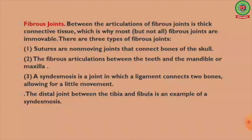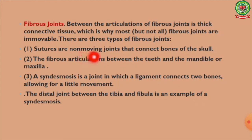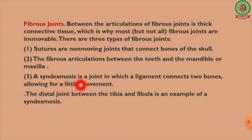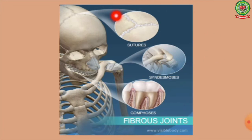Next we discuss types of joints depending upon structure: fibrous joints, cartilaginous joints, and synovial joints. In fibrous joints, thick connective tissue lies between the articulating bones, which is why most fibrous joints are immovable. There are three types of fibrous joints: sutures (non-moving joints connecting bones of the skull), the fibrous articulation between the teeth and the mandible or maxilla, and syndesmosis — a joint in which a ligament connects two bones allowing slight movement. The distal joint between the tibia and fibula is an example of syndesmosis.